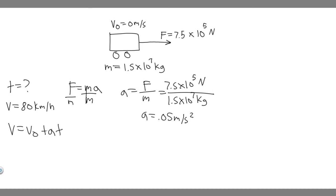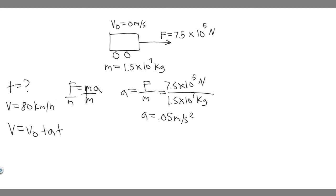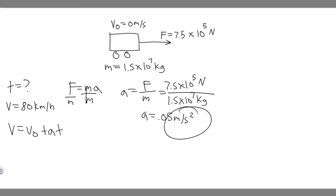Now we have the acceleration, so all we have to do is plug it into the kinematic equation. But notice our acceleration is in meters per second squared and our time will be in seconds, while the velocity given is 80 kilometers per hour. We have to convert it into the correct units — meters per second — because we're using meters per second squared.